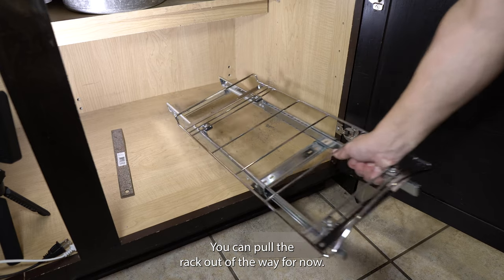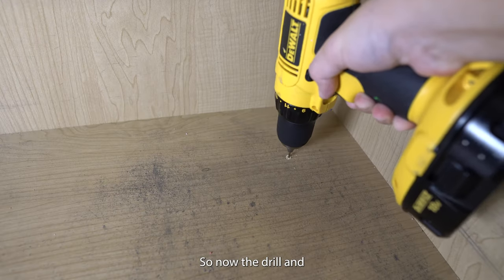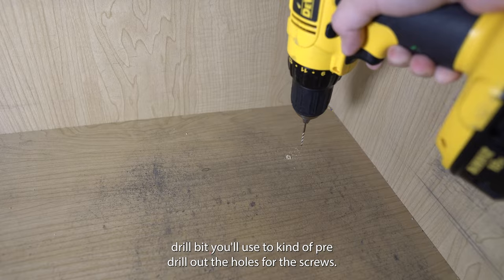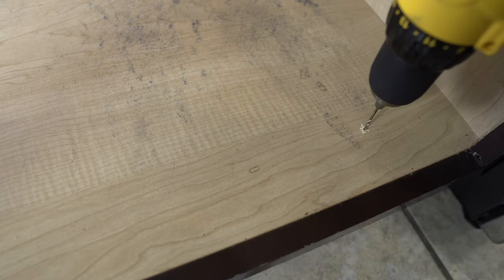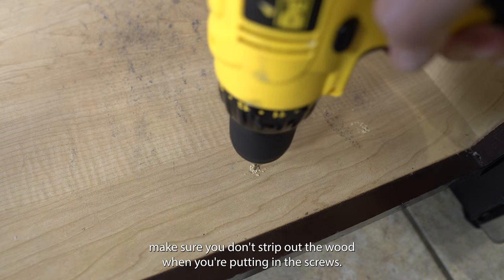You can pull the rack out of the way for now. So now the drill and drill bit you'll use to pre-drill out the holes with the screws. That makes it a lot easier during the installation process. It also helps make sure you don't strip out the wood when you're putting in the screws.